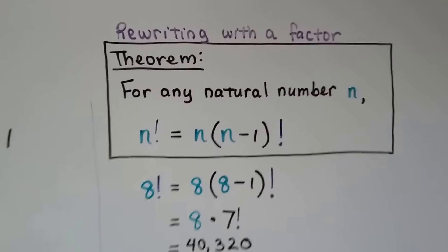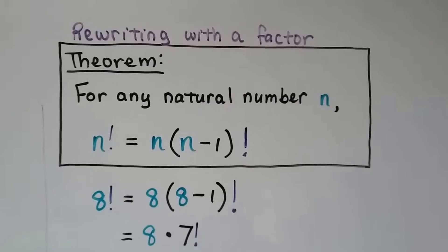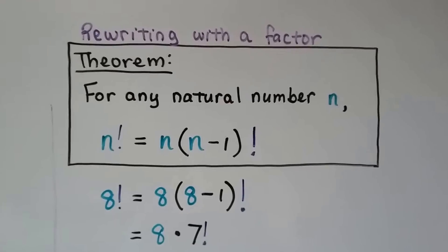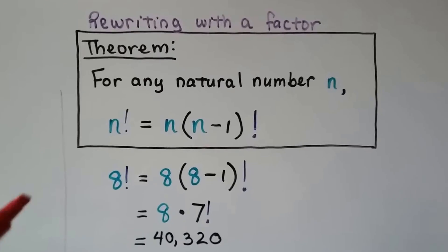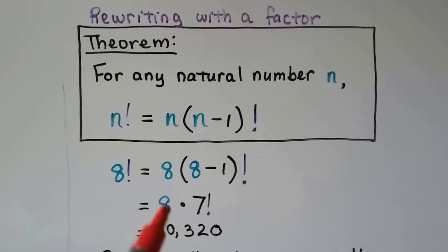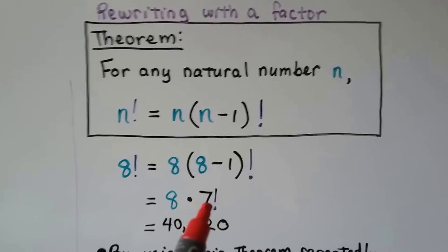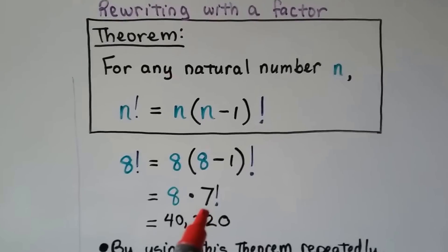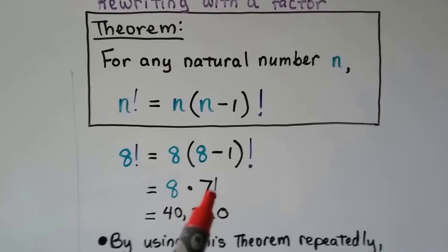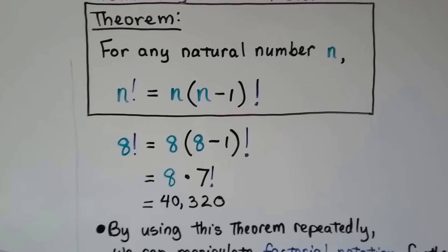Here's a theorem for rewriting with a factor. For any natural number n, n factorial is equal to n times n minus 1 factorial. 8 factorial is equal to 8 times 8 minus 1 factorial, which means it's equal to 8 times 7 factorial. We'd still have the list of natural numbers that descend to 1 with this 7 factorial. It would equal 40,320.